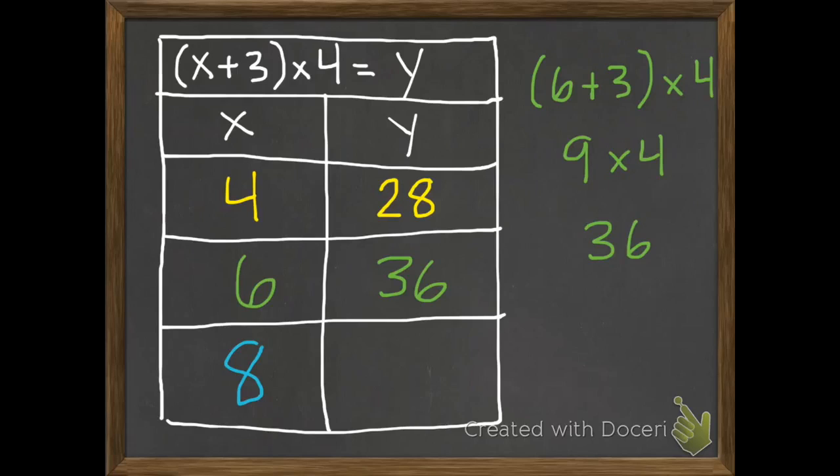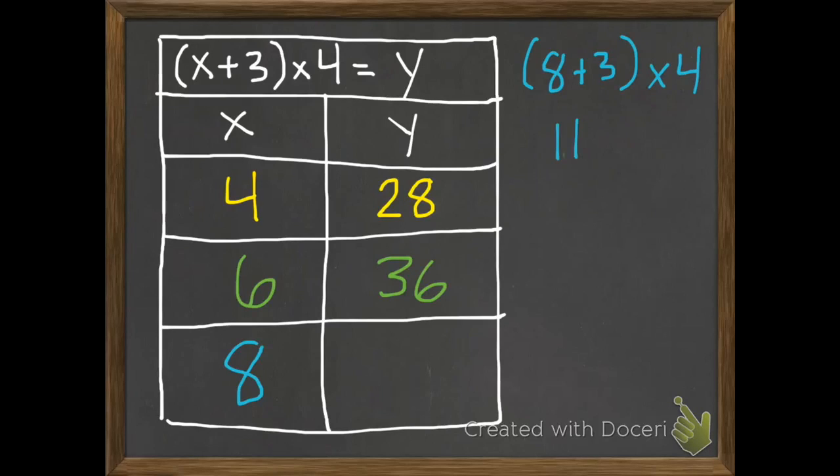And I've got one more x. When x is 8. So 8 plus 3 times 4. 8 plus 3 is 11. 11 times 4 is 44. So that one had three parts to it.